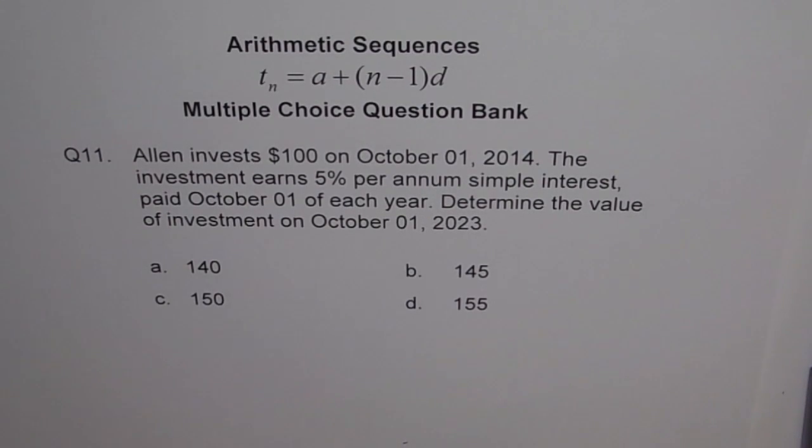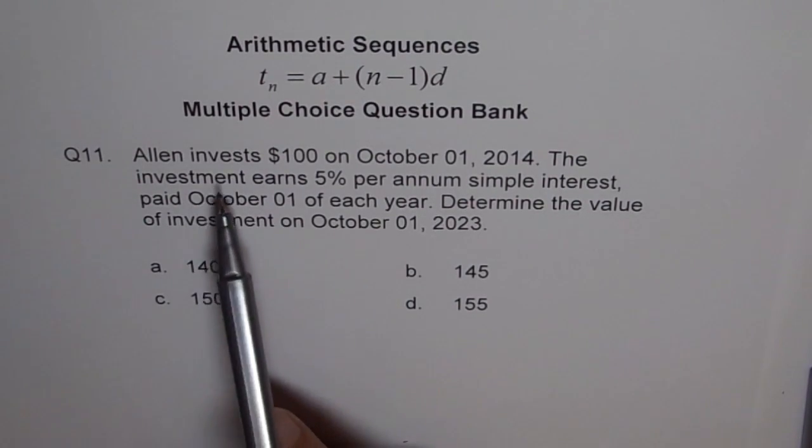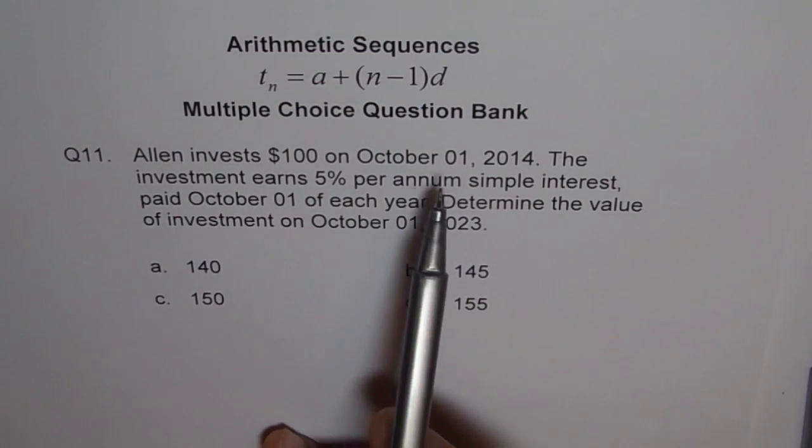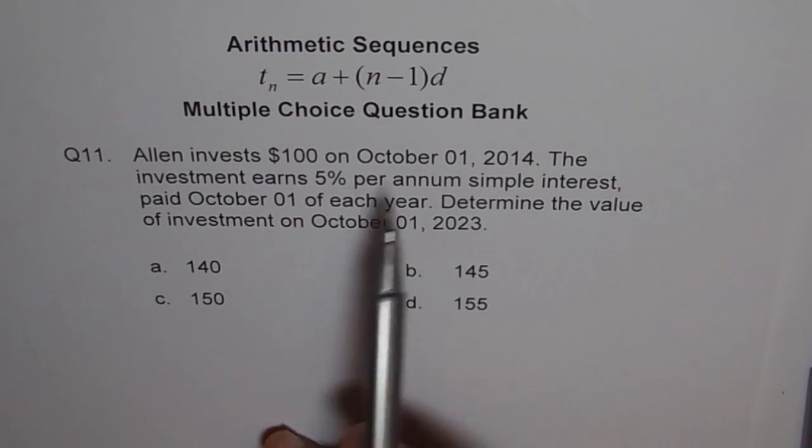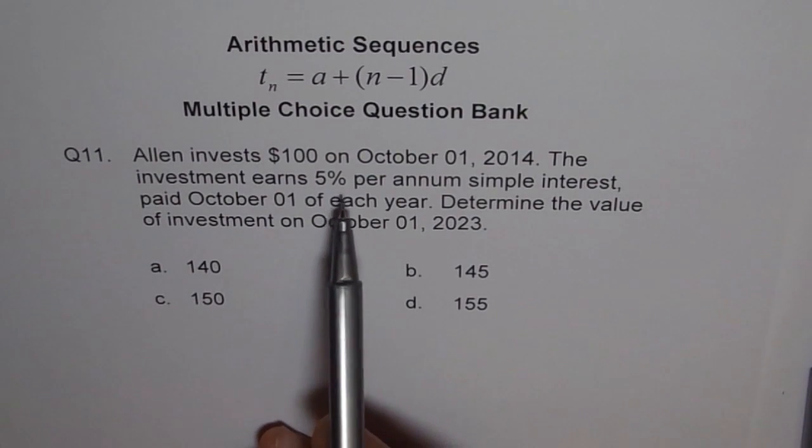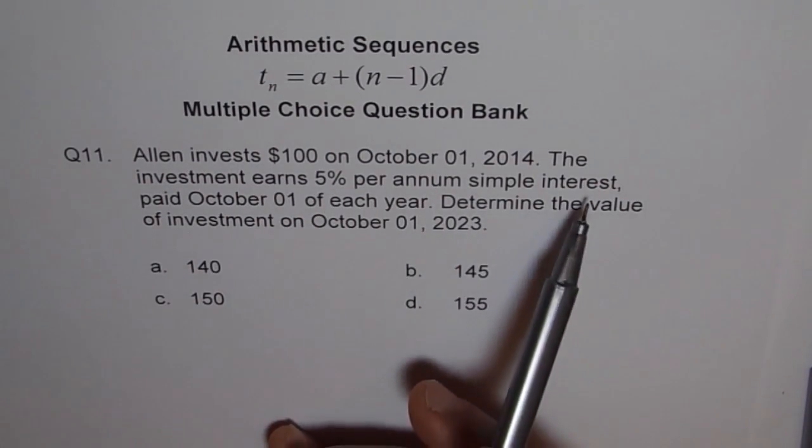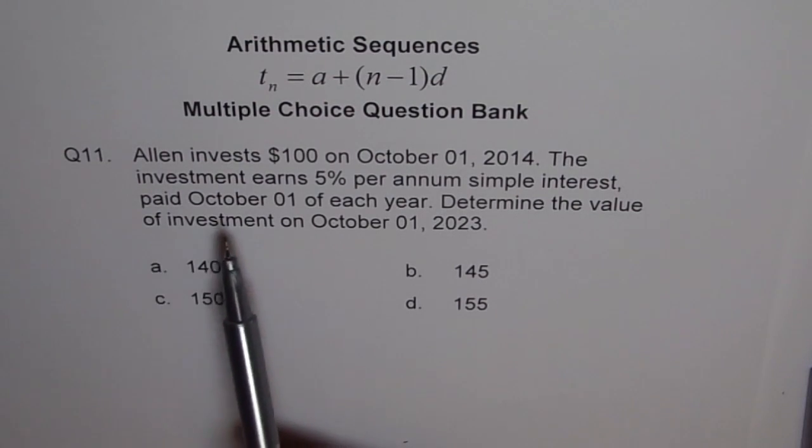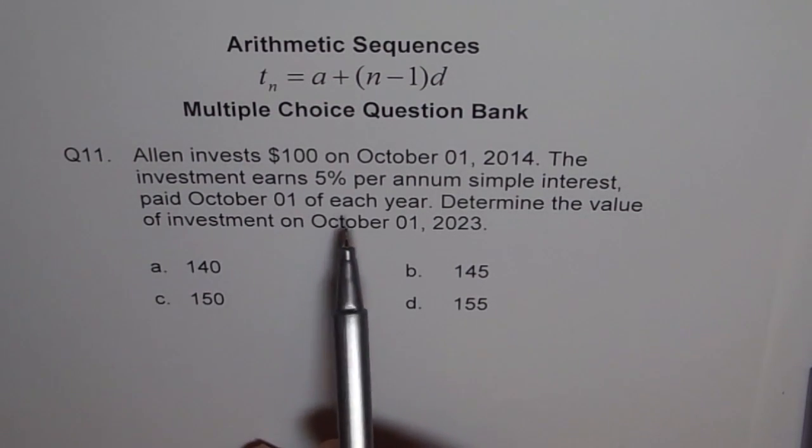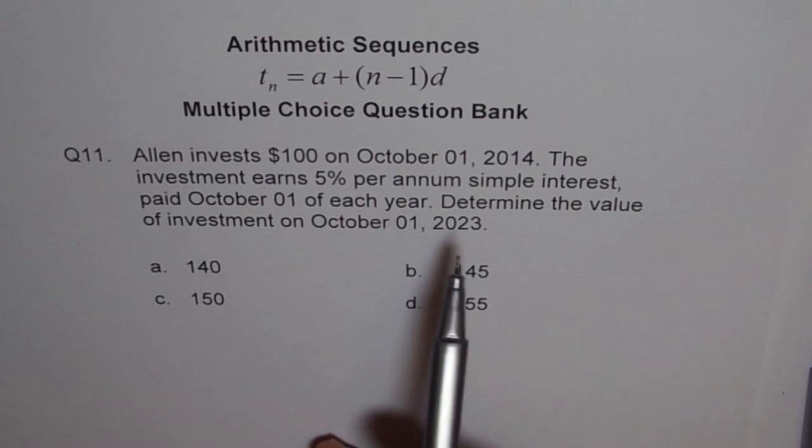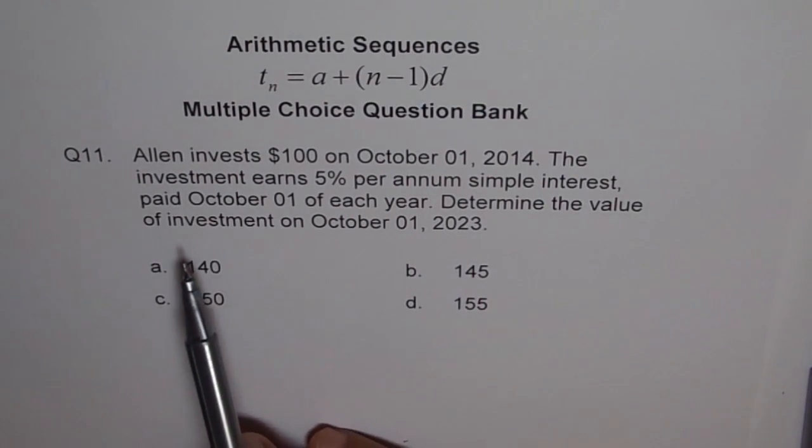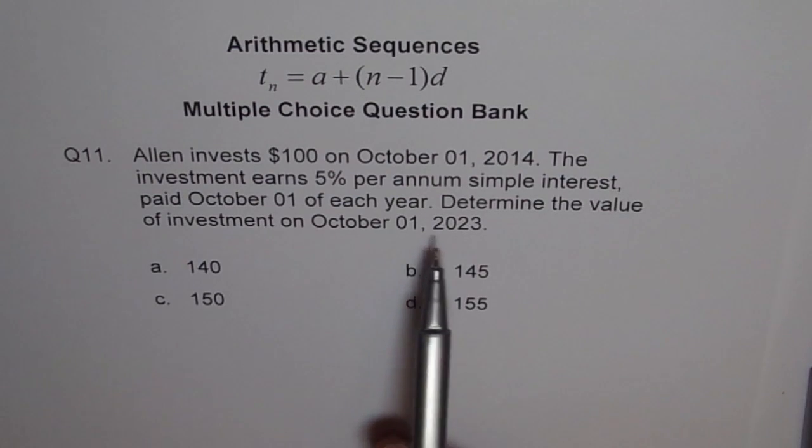Here is an application problem on arithmetic sequence. Question 11. Allen invests $100 on October 1, 2014. The investment earns 5% per annum simple interest, paid October 1 of each year. Determine the value of investment on October 1, 2023.